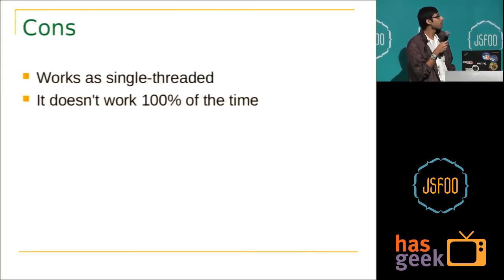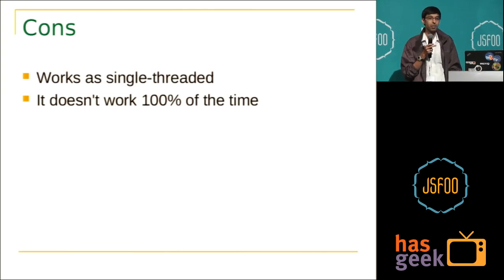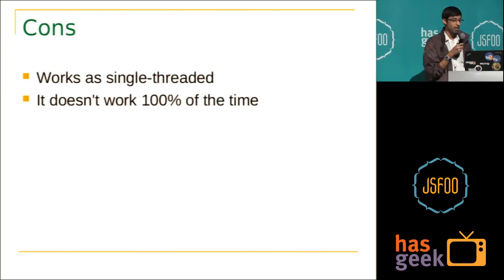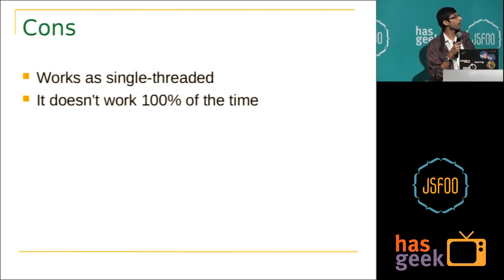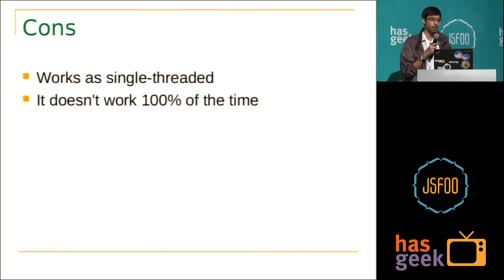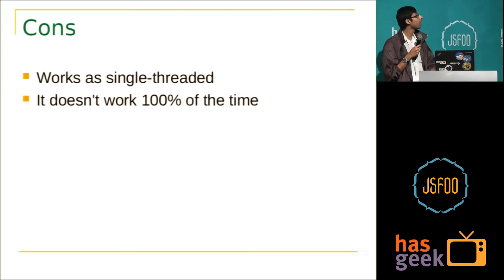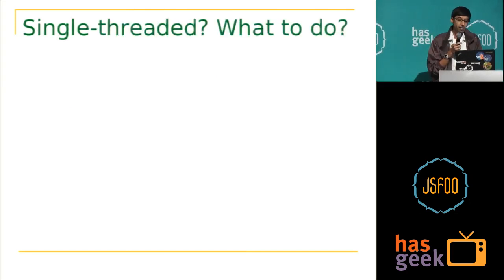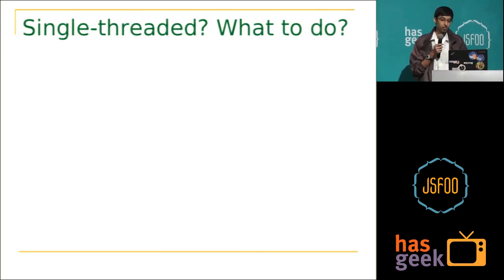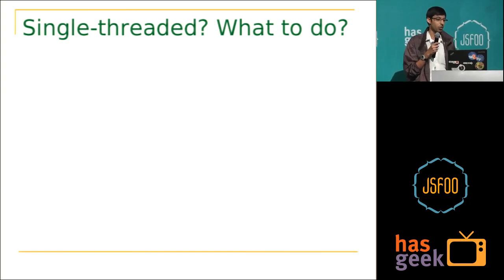One of the problems I faced was it doesn't work 100% of the time. In the thing that I wrote, it had some issues, so I had to do some sort of a hack. And it works as single-threaded. Since PhantomJS processes work in a single thread, what that means is it's not a really good way to write a crawler — and that's what I was trying to do.